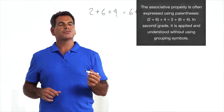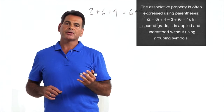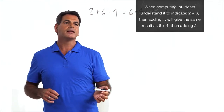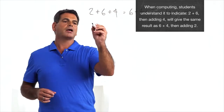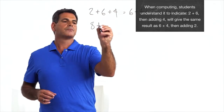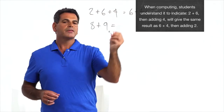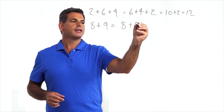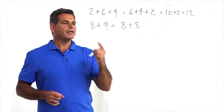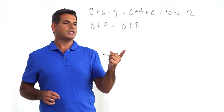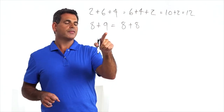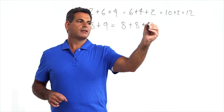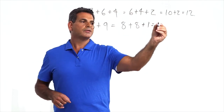Another strategy is doubles. Students generally learn their doubles quickly — two plus two, four plus four, eight plus eight. So let's look at eight plus nine. They know their eight doubles: eight plus eight is sixteen. And since nine is one more than eight, then eight plus eight plus one is seventeen.